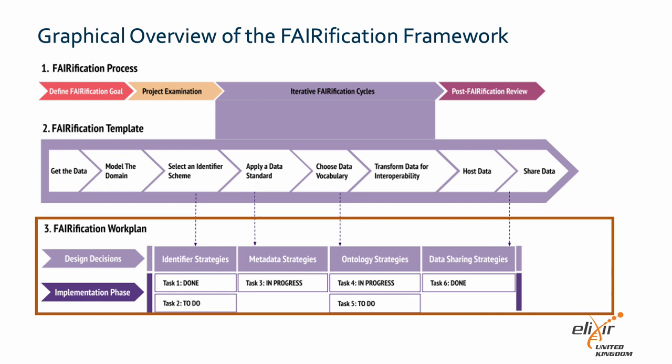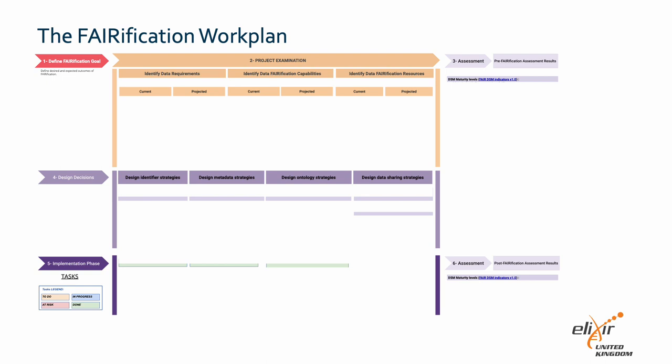We will now introduce another tool for verification, that is the verification work plan. This work plan layout provides a structure for organizing fair implementation work tailored to the needs of a specific project. The verification work plan is a customized design and implementation plan developed for a particular project, incorporating the established goals from phase one and identified requirements from phase two of the verification process. Relevant elements from the verification template are chosen and translated into actionable tasks. These tasks are then completed within the designated cycle time frame, in accordance with the verification process. The work plan is structured into five sections, aligning with the overarching structure of the verification process.